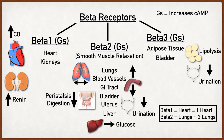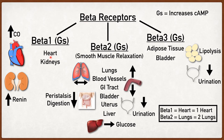One example of a highly selective drug is metoprolol, a drug used to treat high blood pressure. To understand and appreciate the action of metoprolol and how selectivity is important, we need to review the different types of beta receptors and where they are located. We have three types of beta receptors: beta 1, beta 2, and beta 3, located in different parts of the body. Beta 1 predominates in the heart, and beta 2 receptors are present most prominently on the smooth muscle of the lungs.